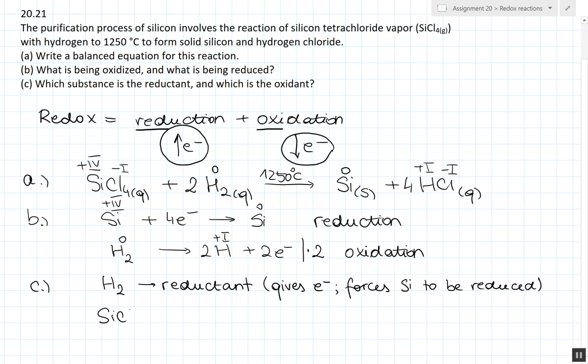While our silicon tetrachloride, where we can find our silicon plus 4 ion, is in turn being the oxidant by requiring the 4 electrons from hydrogen.